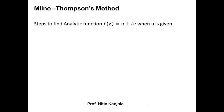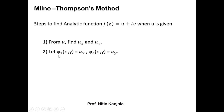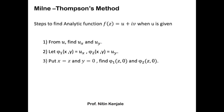Now we see the steps involved in finding the analytic function f(z) = u + iv whenever its real part u is given. Step 1: find the partial derivatives of u with respect to x and y. Step 2: let φ1(x, y) = u_x and φ2(x, y) = u_y. Step 3: put x = z and y = 0 in these expressions to find φ1(z, 0) and φ2(z, 0).